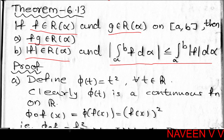For the proof: part one, f times g belongs to R(α); part two, |f| belongs to R(α); and the modulus of the integral from a to b of f dα is less than or equal to the integral from a to b of |f| dα.